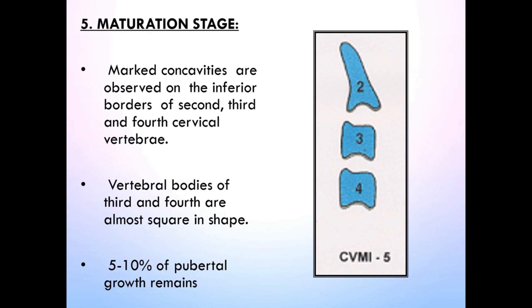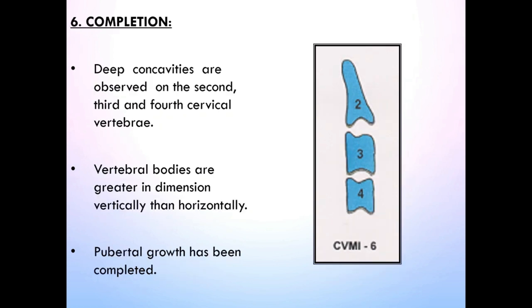Stage 5 is Maturation. Marked concavities are observed on the inferior borders of C2, C3, and C4. Vertebral bodies of C3 and C4 are almost square in shape. 5–10% of pubertal growth remains. The concavities at the lower borders of C2, C3, and C4 are still present. At least one of the bodies of C3 and C4 is squared in shape; others are rectangular horizontal. The peak in mandibular growth spurt has ended at least one year before this stage.